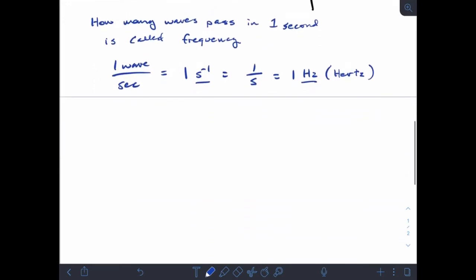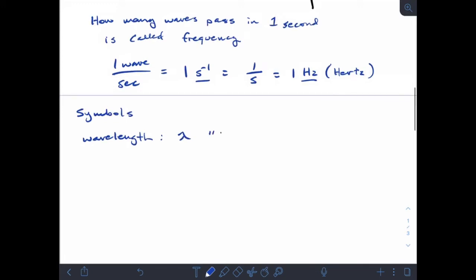Now we have symbols for wavelength and frequency. Our symbol for wavelength is the Greek symbol that looks like this, and it's called lambda. Our symbol for frequency looks like a special v, and that's called nu (N-U). These are Greek symbols. And we already know the symbol for light speed is just c.